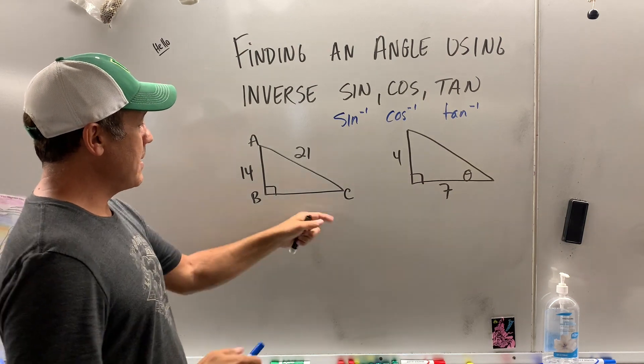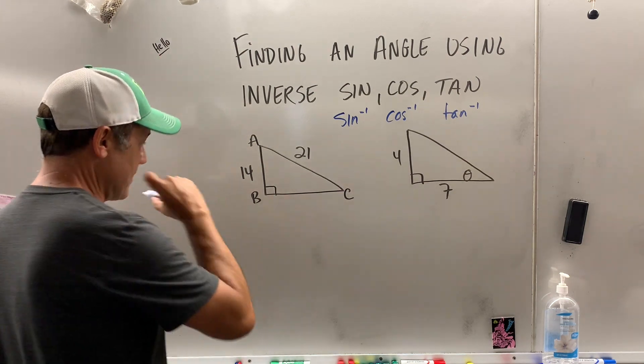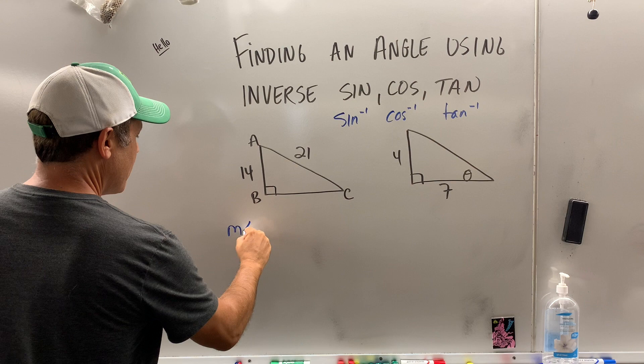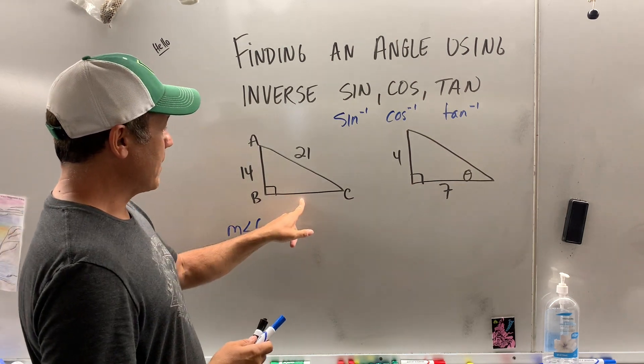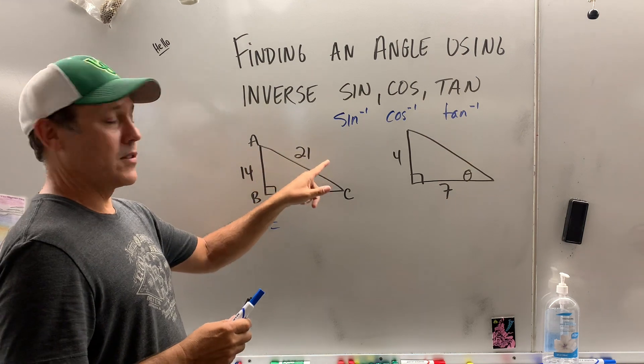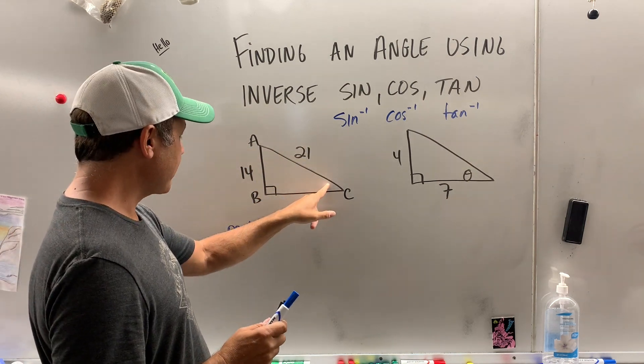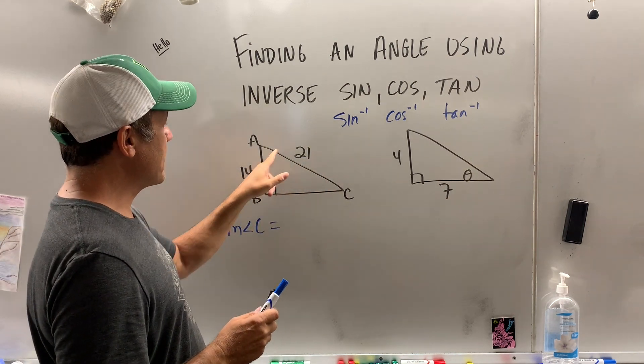Let's find what angle C is. The measure of angle C, now you've got to figure out, we don't know what this length is, so we do know these two lengths. So what trig function has the opposite in hypotenuse?